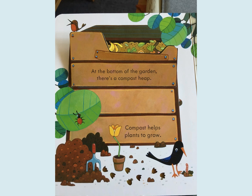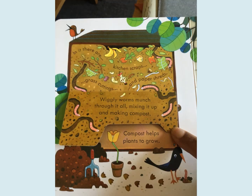Maybe you have a compost heap. In this book, at the bottom of the garden there is a compost heap. Compost helps plants to grow because compost is really rich in minerals and nutrients that plants need in order to grow healthily — things like nitrogen, magnesium, etc. Inside the compost heap there are kitchen scraps, grass cuttings and paper shreds. Wiggly worms munch through it all, mixing it up and making compost.